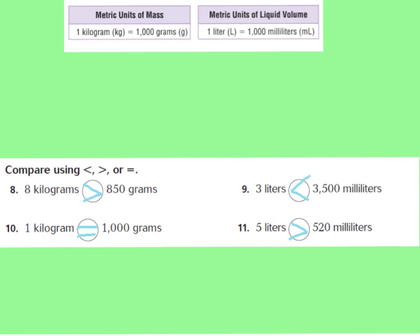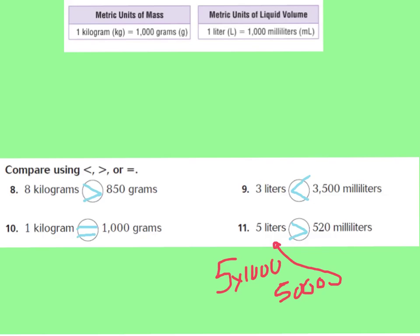Let's go over numbers 10 and 11. Number 10 says 1 kilogram compared to 1,000 grams. Looking at my chart, 1 kilogram is equal to 1,000 grams, so they are equal to each other. Number 11: 5 liters compared to 520 milliliters. I'll change 5 liters to milliliters — 5 times 1,000 equals 5,000. So 5 liters equals 5,000 milliliters, which is a lot more than 520 milliliters. So 5 liters is greater than 520 milliliters.